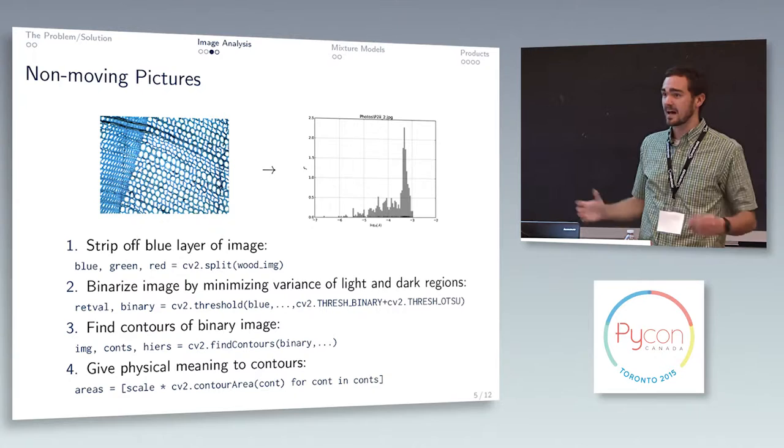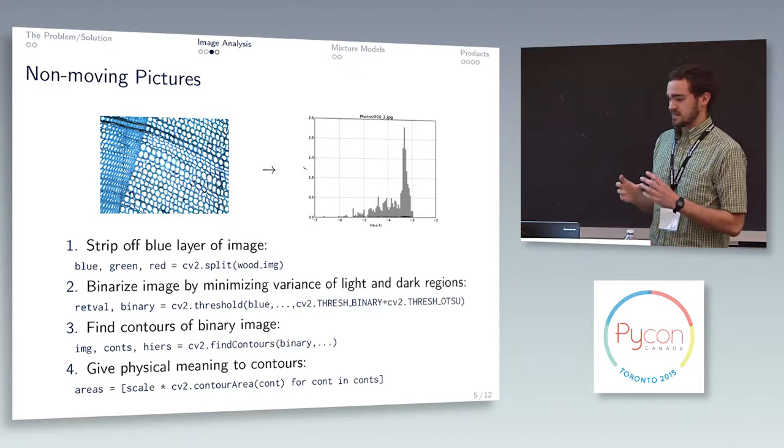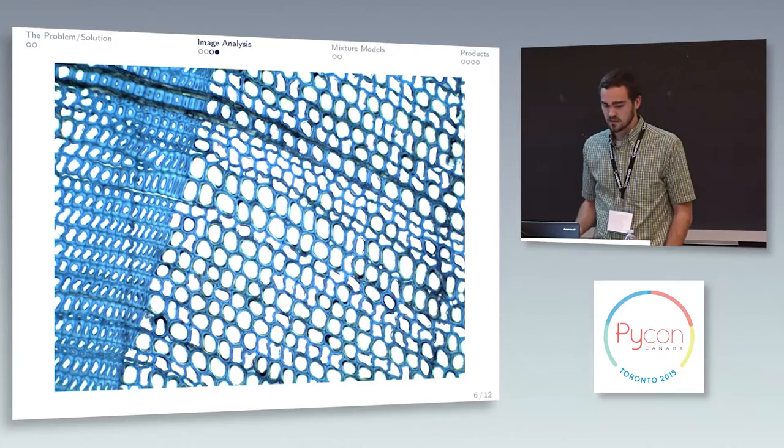That OTSU binarization is this massive minimization procedure all wrapped into a nice convenient little function there. You can find contours, that's really straightforward, and then you can scale things according to whatever length scale you want to use.